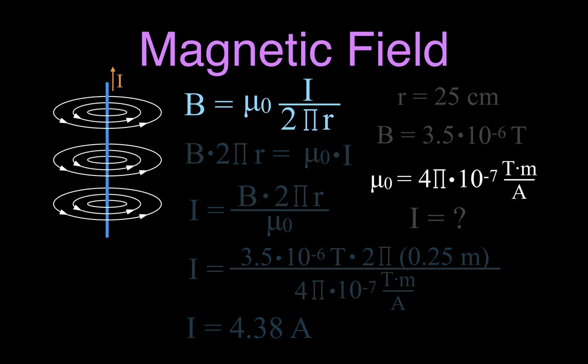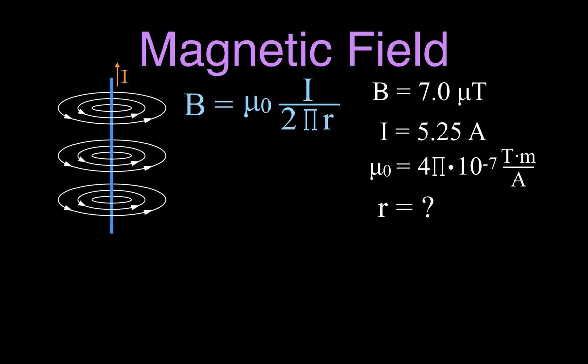For the third example, we're going to calculate the radius. If we have a current of 5.25 amperes running through this wire, and we want to know at what distance away from the wire would we get a magnetic field of 7.0 microteslas — we'll solve for that distance.